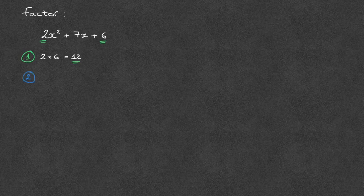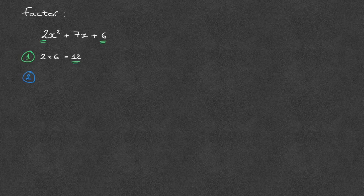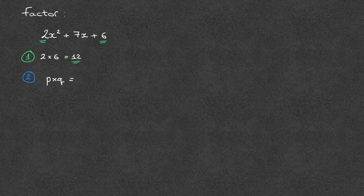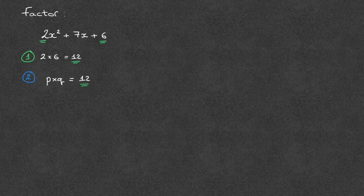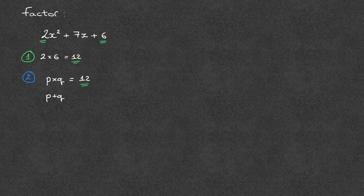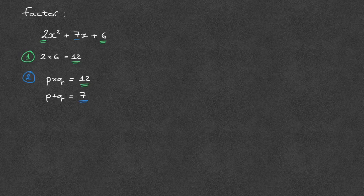The second step, we need to find two numbers which I'll call p and q. And those two numbers must be such that their product, so p times q, equals 12. And that 12 is the number we just found in step 1. But on top of this, the sum of those two numbers, so p plus q, has to equal 7. And that 7 is the number that's multiplying the x in our quadratic.